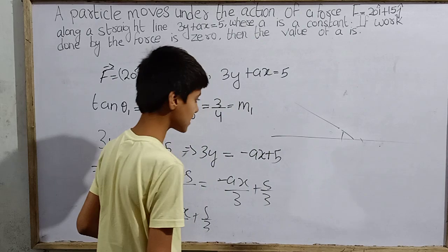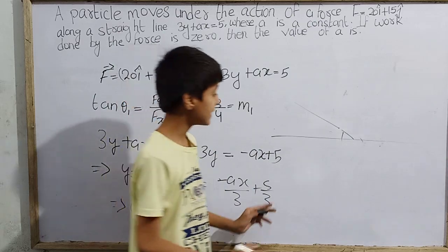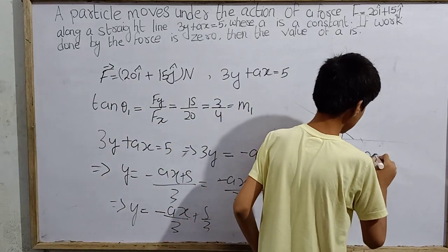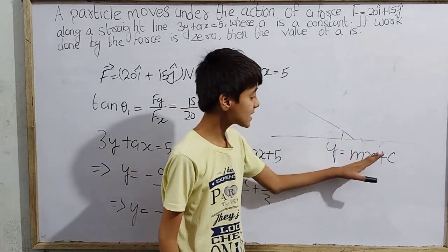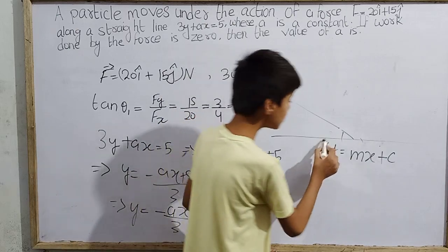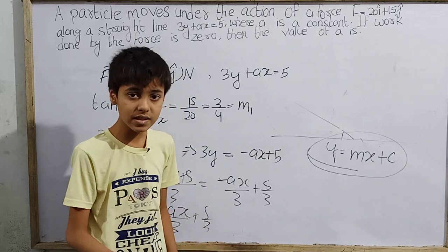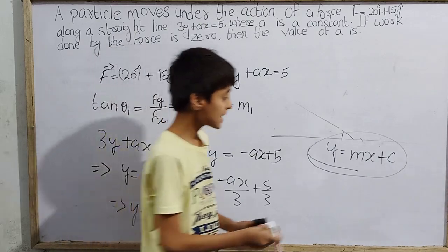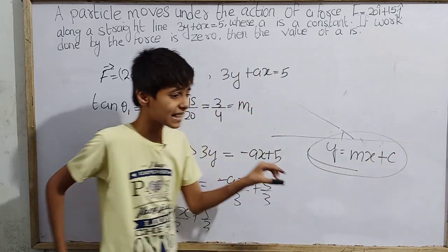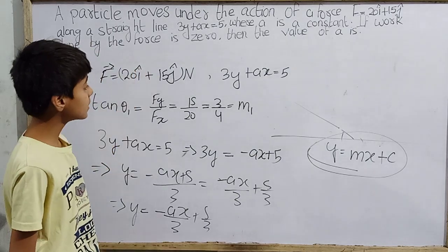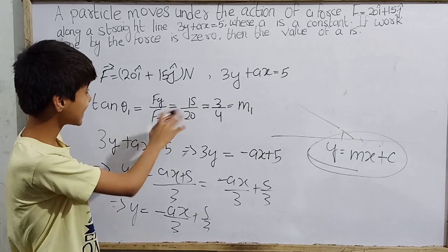Yes, we found something useful. For any line, the equation y equals mx plus c is always valid — that is always the form. So comparing our equation y equals minus ax by 3 plus 5 by 3 with y equals mx plus c, we can see that c equals 5 by 3, and the slope m2 equals minus a by 3.